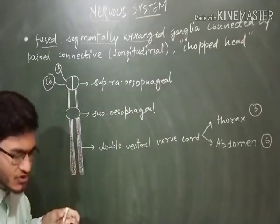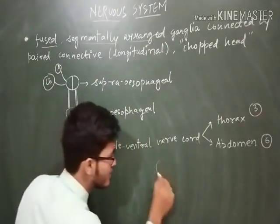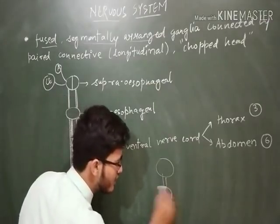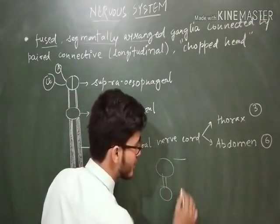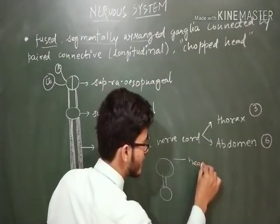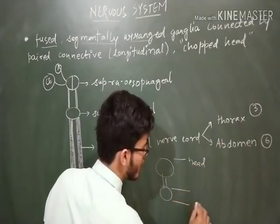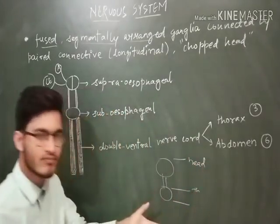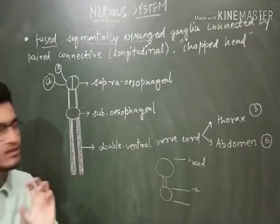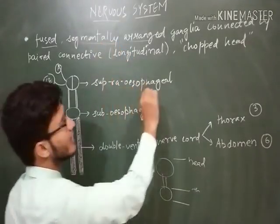So ganglions are fused, it means that they are connected. For example, this is one ganglion, this will be connected to the second one. And they are present segmentally. For example, this one is present in head, and after that, two ganglions are present in thorax and so on. So they are present in the segments, so segmentally arranged.